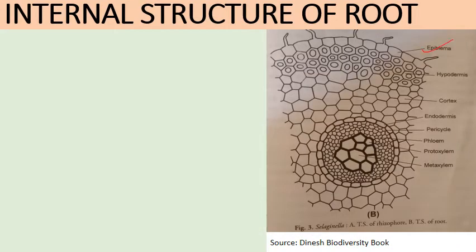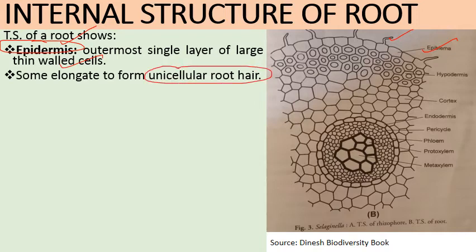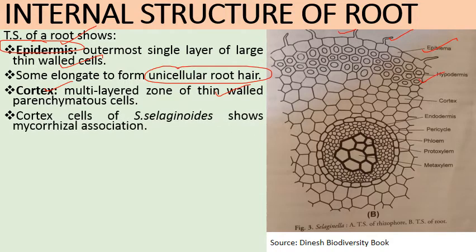The internal structure of the root shows outermost epiblema — a single layer of large, thin-walled parenchymatous cells, some of which elongate to form unicellular root hairs. This is followed by a multi-layered cortex of thin-walled parenchymatous cells, with some sclerenchymatous cells in the outer region. Cortex cells of Selaginella selaginoides show mycorrhizal association — a symbiosis with fungi.